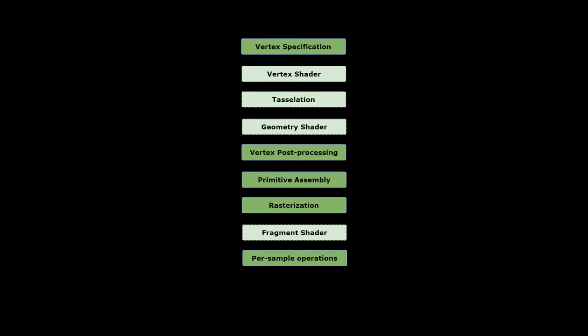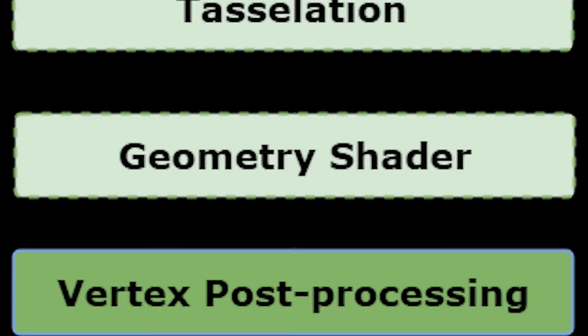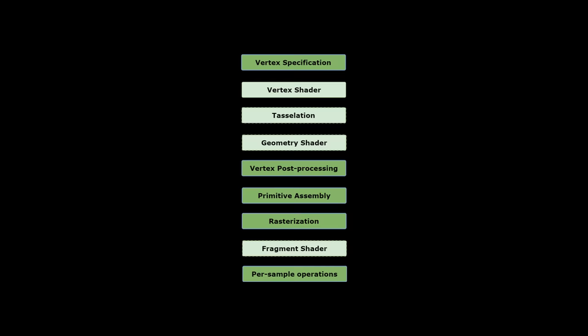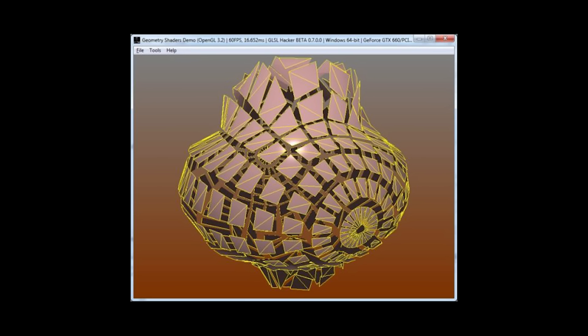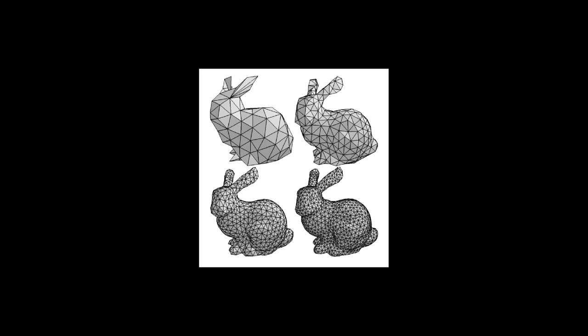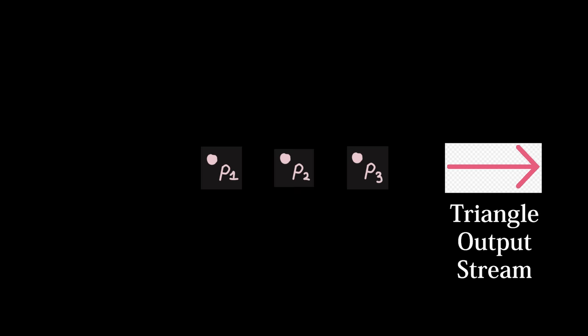I've gone through the trouble of implementing it according to a tutorial I found, so let me go over how it works. The geometry shader stage exists between the vertex shader and the fragment shader. It governs the processing of the primitives of a mesh. The shader operates on one primitive at a time rather than one vertex at a time like the vertex shader, which allows you to do some wacky effects like flat shading or explosions. Additionally, you can create new geometry in this stage by appending vertices to the triangle output stream defined in the shader code.